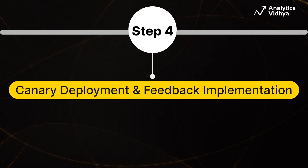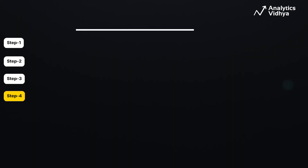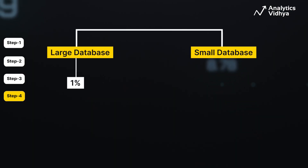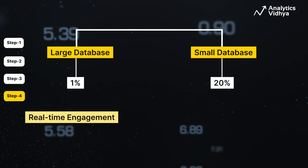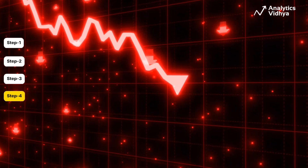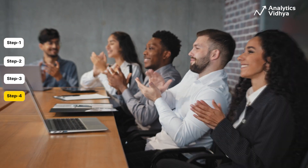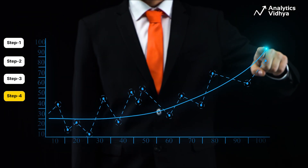Step 5: Canary Deployment and Feedback Implementation. After internal testing, we deploy the new tools gradually. Start small — like 1% from large databases or 20% of smaller ones. Analyze real-time engagement: click-through rates, open rates. If metrics aren't improving, tweak the system. At this stage, the system isn't fully autonomous, as human intervention is still required to improve the agents based on email performance. Once satisfied with the sample set's performance, we can gradually increase the audience subset for deployment. With each increase, monitor performance and adjust the agents until optimal results are achieved.